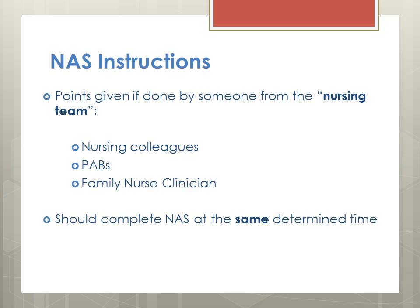There are specific instructions when completing the Nursing Activity Scores. First of all, points are given if the activity was done by someone from your nursing team. Who is part of your nursing team? Your nursing colleagues, your PAB, and your family nurse clinician. So if only the RT suctioned the patient or did chest physiotherapy during your shift, then the point cannot be given in the section on respiratory support.